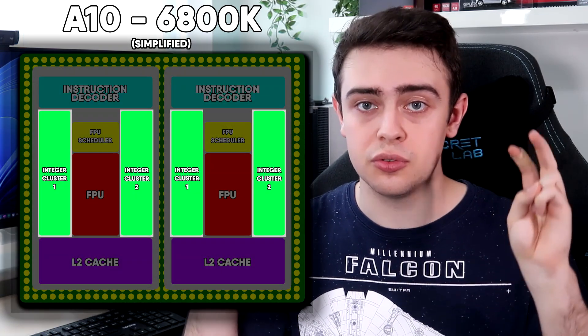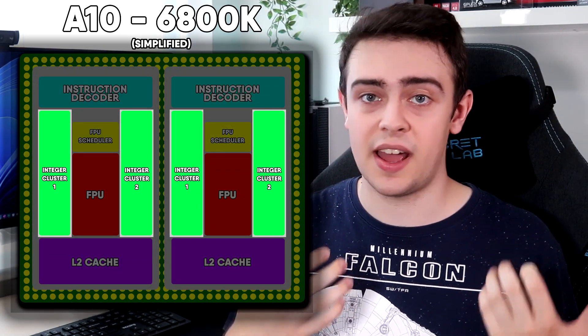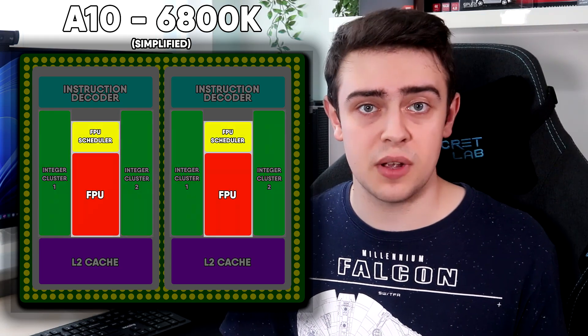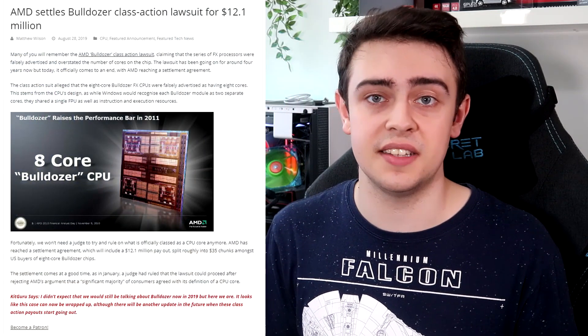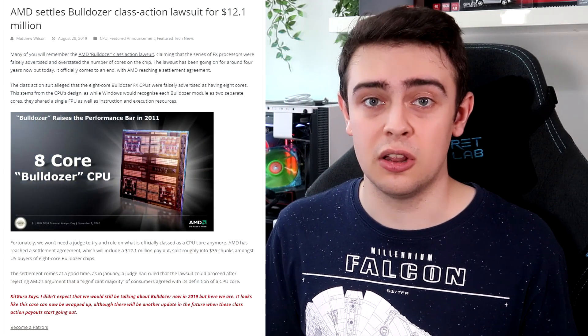So what does this mean for you? Piledriver and Bulldozer CPUs and APUs like the A10-6800K do indeed have four true cores as advertised in CPU-Z and by AMD, but as a result of shared hardware resources they cannot act completely independently. This actually resulted in a class action lawsuit against AMD for false advertising, which AMD lost in 2017. This is why old AMD CPUs are so well known for terrible performance compared to Intel alternatives — though AMD corrected this with Ryzen.